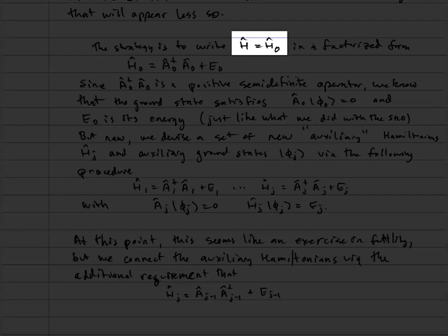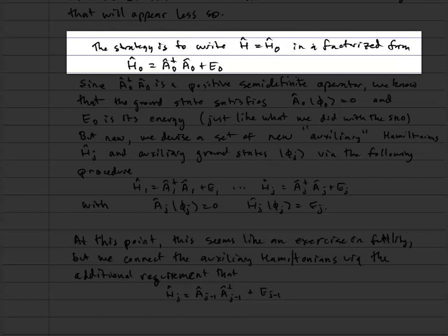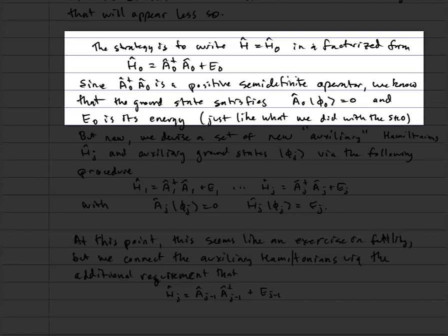We're going to rewrite that Hamiltonian in terms of a₀† times a₀ plus an e₀. Since a₀†a₀ is a positive semi-definite operator — meaning the expectation value as a bra-ket sandwich with a₀†a₀ equals the norm of the state a₀|ψ⟩, and the norm is always non-negative — the lowest expectation value a₀†a₀ can have is zero. That occurs when a₀ acting on the state |φ₀⟩ equals zero, and that state will be the ground state with energy e₀.